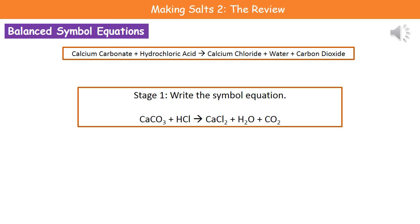The next thing we need to do is actually write balanced symbol equations. Looking at the example at the top, we've got calcium carbonate plus hydrochloric acid makes calcium chloride plus water plus carbon dioxide. The first thing we need to do is write the symbol equation. While they're going to give you some chemicals in the question, they won't give you all of them — at the end of this review I've given you the list of the ones you need to remember.